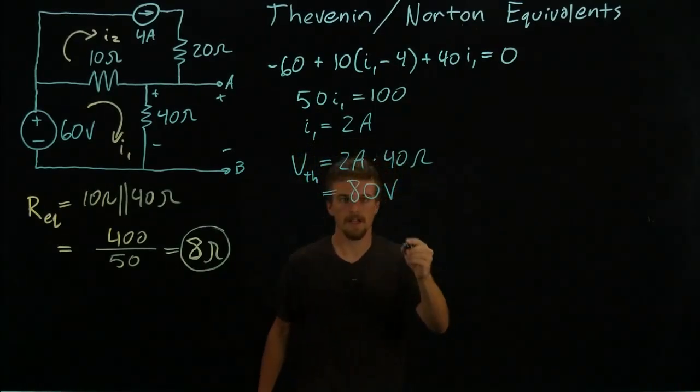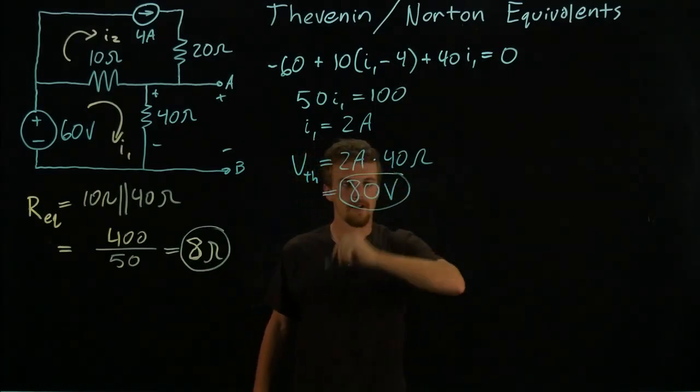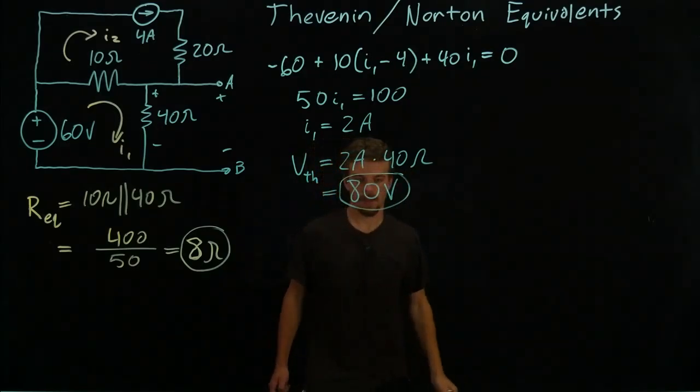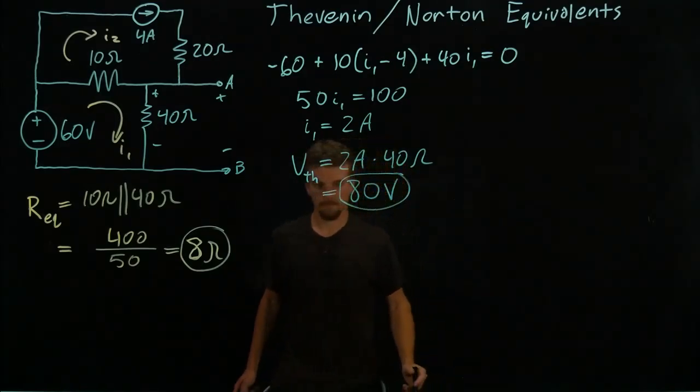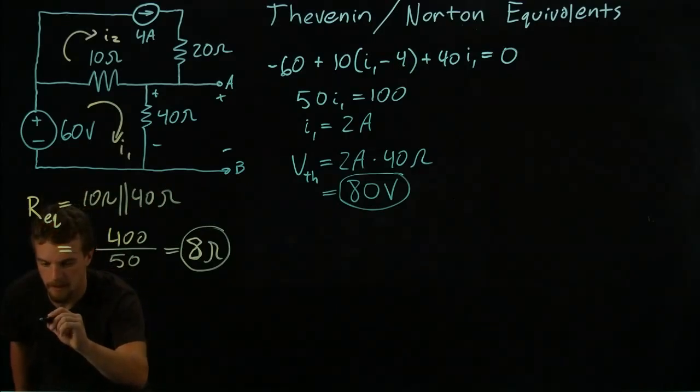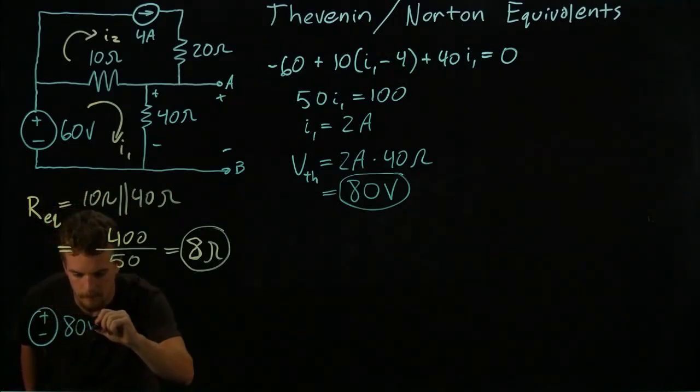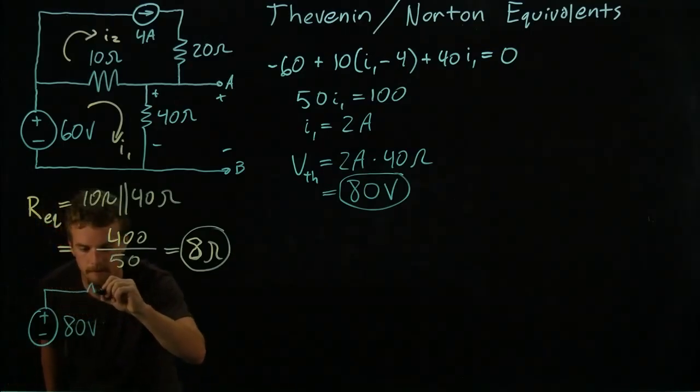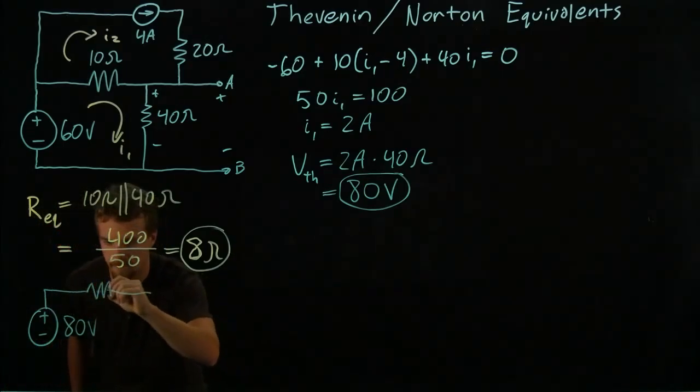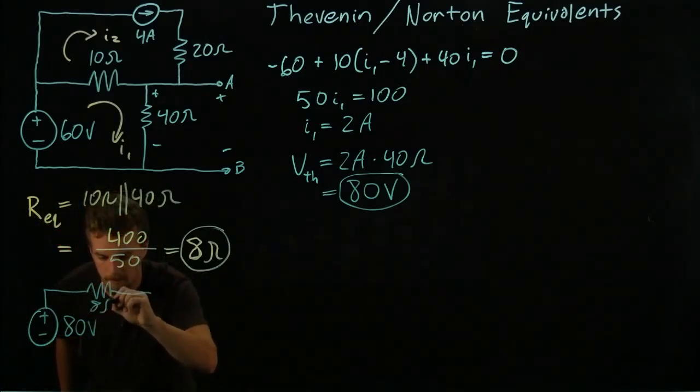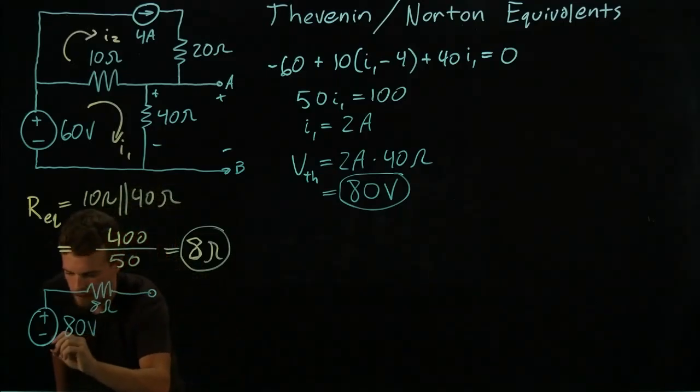Okay, so that is the value for our Thevenin source and maybe we'll draw the Thevenin circuit down here somewhere. We'll have an 80 volt source in series with an 8 ohm resistor, points A and B.